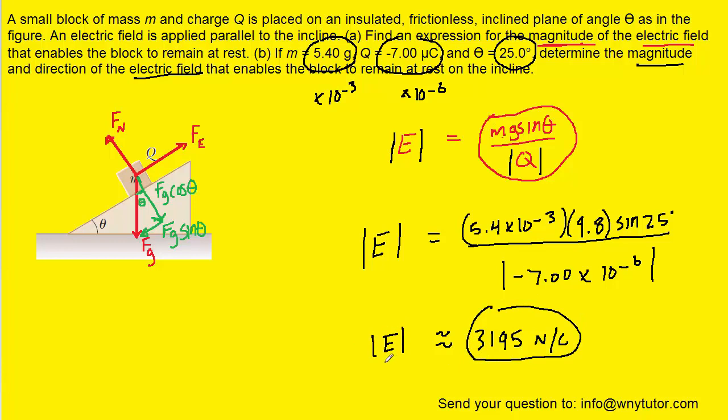We also need the direction. From the diagram, the electric force is pointing up the ramp. We have a negative charge. For negative charges, the electric force points in a direction that is opposite to the electric field. We'll say that again: for negative charges, the electric force points in a direction that's opposite to the electric field.